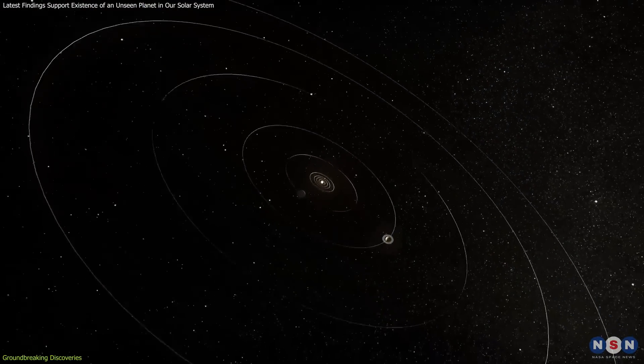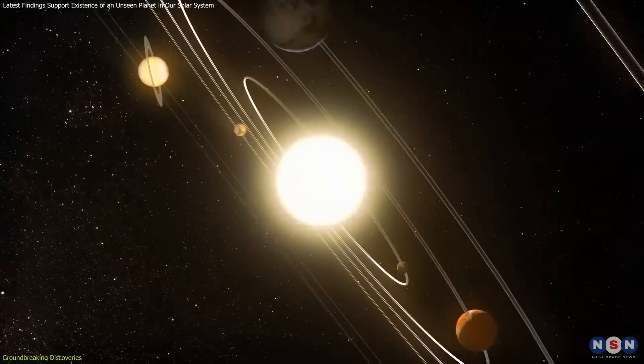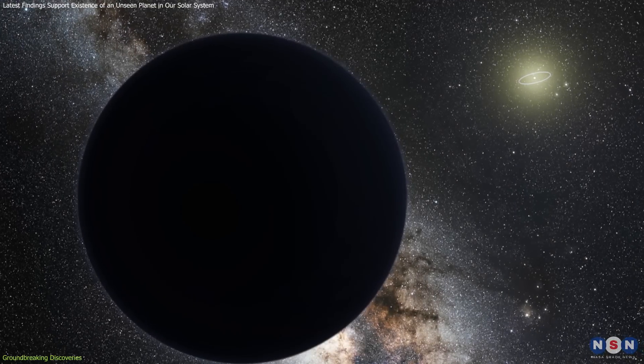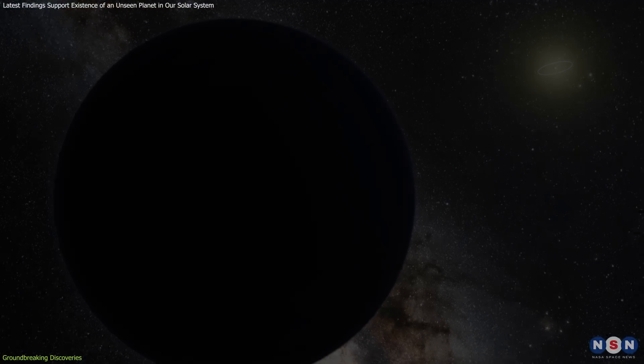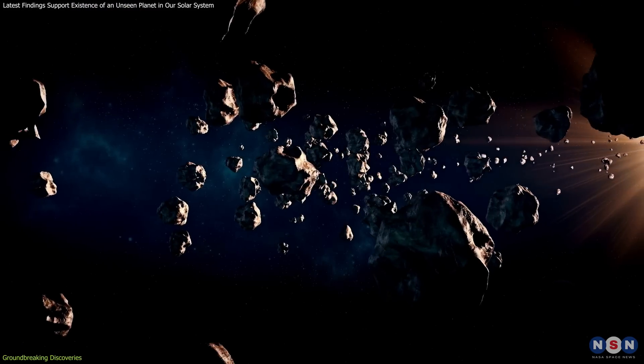Researchers have utilized advanced computer simulations to model the dynamical behavior of the outer solar system under the influence of such a planet. These models show that a massive distant planet could naturally lead to the types of orbital architectures observed among the TNOs.